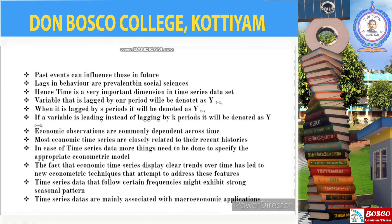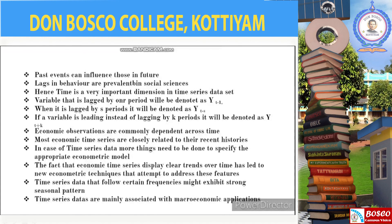A variable that is lagged one period will be denoted as y_{t-1}, and when lagged by s periods it will be denoted as y_{t-s}. Similarly, if it is leading by k periods it will be denoted as y_{t+k}. A key feature of time series data that makes them more difficult to analyze than cross-sectional data is that economic observations are commonly dependent across time — that is, most economic time series are closely related to their recent histories. In the case of time series, more things need to be done to specify the appropriate econometric model, and the fact that economic time series display clear trends over time has led to new econometric techniques.